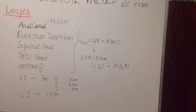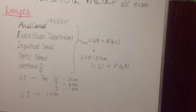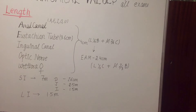Fallopian tube, Eustachian tube, inguinal canal, optic nerve, and female urethra are all the same length — 4 centimeter. You can remember this using vowels A, E, I, O, U: A for anal canal, E for Eustachian tube, I for inguinal canal, O for optic nerve, and U for urethra. The Eustachian tube length is approximately 3.6 centimeter.